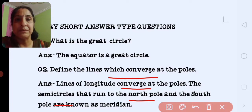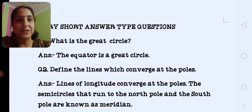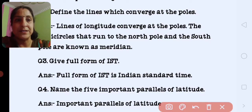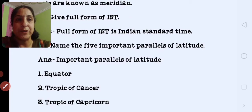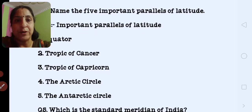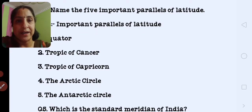Next question is give full form of IST. Full form of IST is Indian Standard Time. Next is name the 5 important parallels of latitude. Important parallels of latitude are equator, tropic of cancer, tropic of Capricorn, Arctic circle and Antarctic circle.